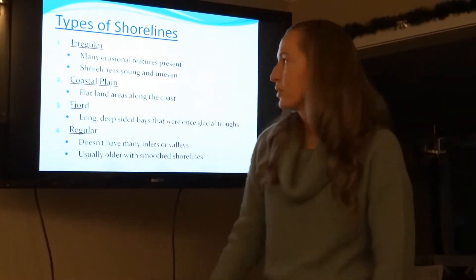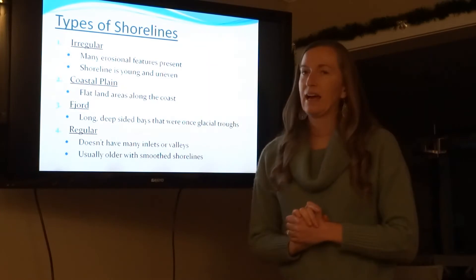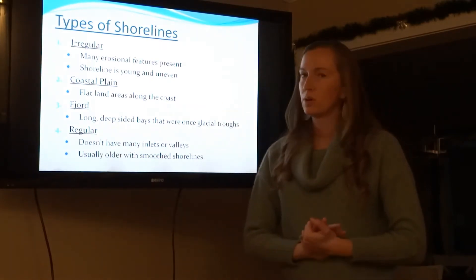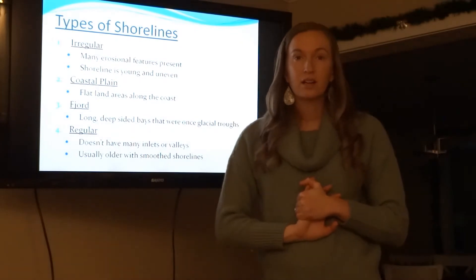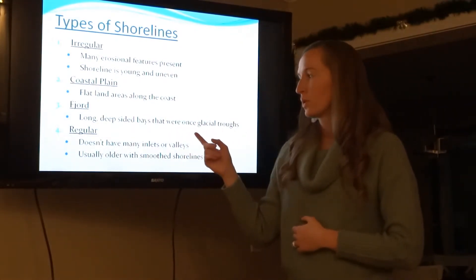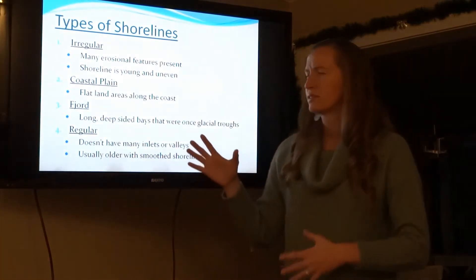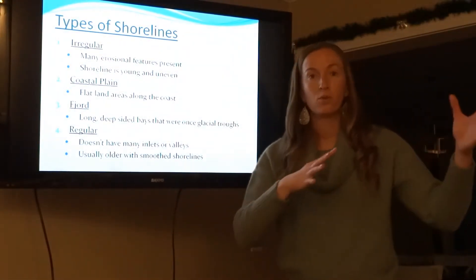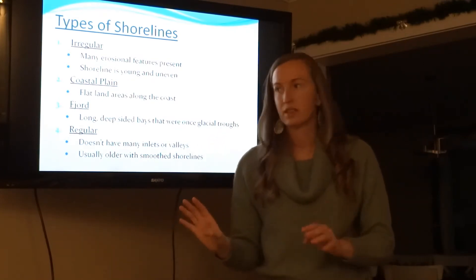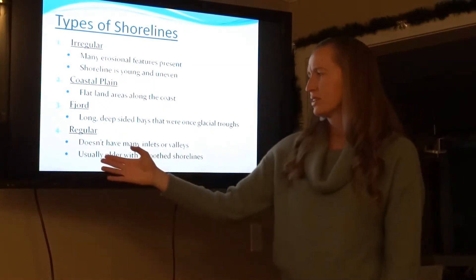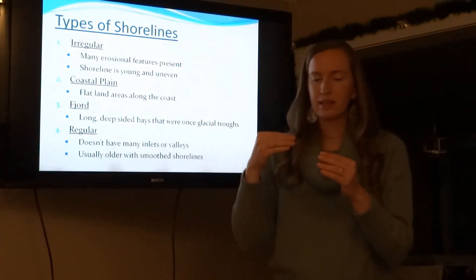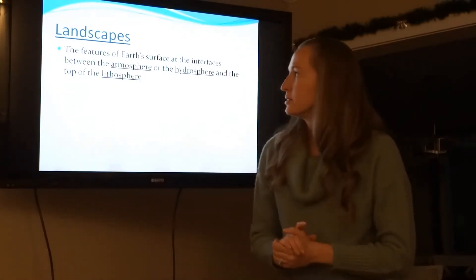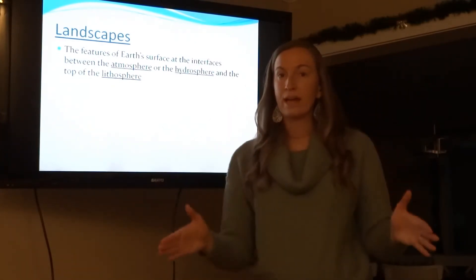There are a couple different types of shorelines. An irregular shoreline is young, uneven, and inconsistent. A coastal plain is a flat area along the coast — North Carolina is an example. A fjord coastline has glacial troughs — Norway is an example, where a landslide could create a tsunami wave taking out a village. A regular coastline doesn't have many inlets or coves — it's pretty much straight. That sums up the wave section of erosion.